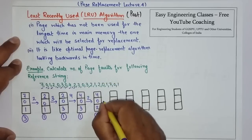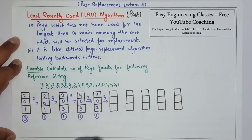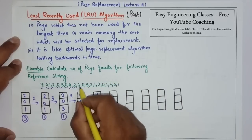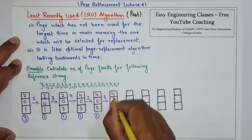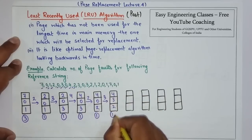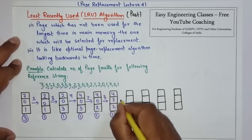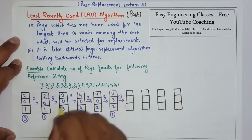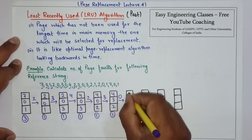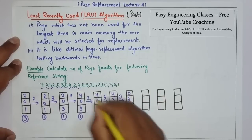Then comes 3. So 3, now 4 and 2 are recently used compared to 0. So 4, 3 and 2. 0 is replaced. After that comes 0. Out of 4, 3 and 2 if we see 4 is the least recent. So 0, 3 and 2.